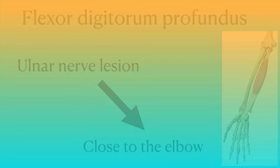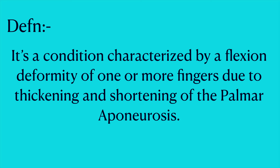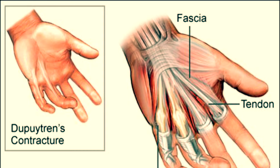Coming to Dupuytren's contracture — it is a condition characterized by a flexion deformity of one or more fingers due to thickening and shortening of the palmar aponeurosis. Normally, the palmar aponeurosis is a thin but tough membrane lying immediately beneath the skin of the palm, which helps to anchor and stabilize the skin. Without this fascia, the skin on your palm would be as loose and movable as the skin on the back of your hand.